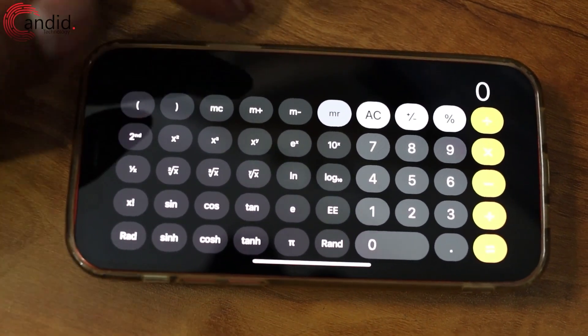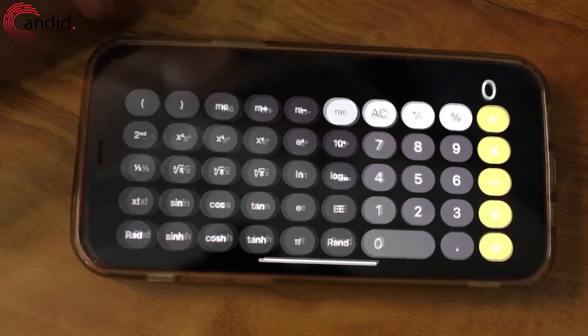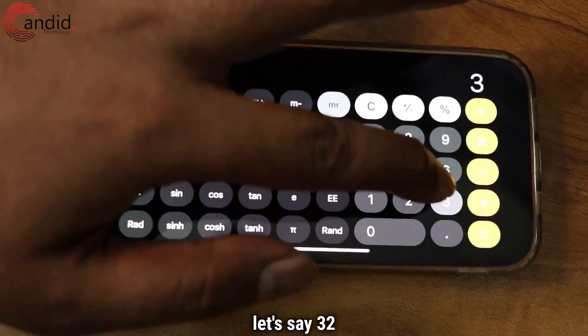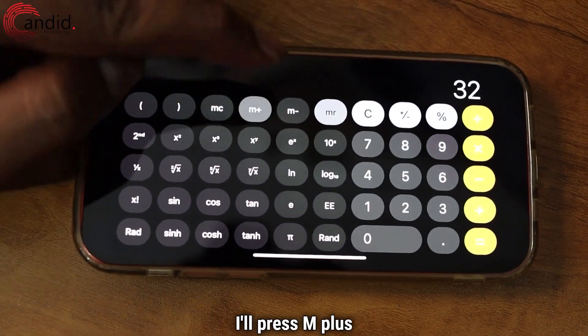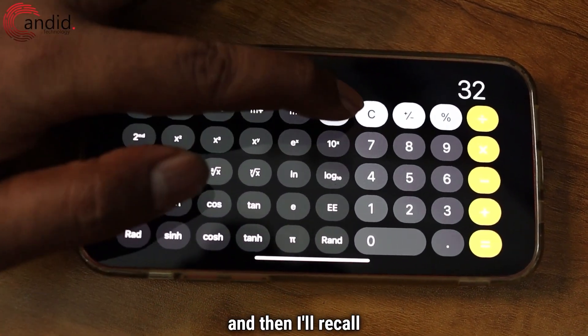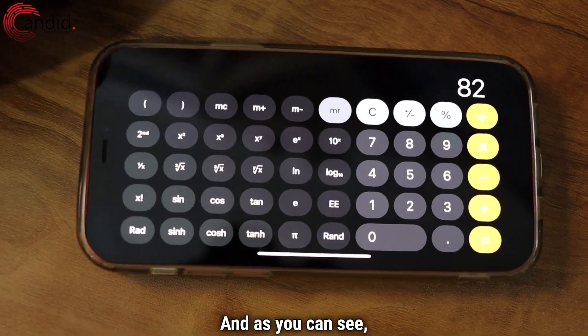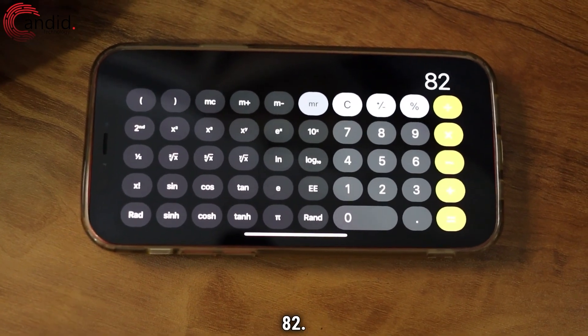Now to see how M plus works. For example, if I want to add, let's say 32 to 50, I'll press M plus and then I'll recall the option MR. And as you can see, 32 has been added to 50 which gives the result 82.